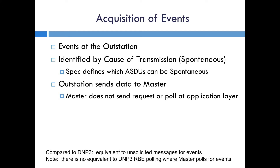Another function is called the acquisition of events. This is where the outstation can identify events or data changes and sends them to the master with the cause of transmission of spontaneous. The specification defines which ASDUs can be spontaneous, and in a similar way defines which ASDUs can be cyclic. The master does not send a request for this at the application layer — the outstation just sends it as the event occurs. This is very equivalent to unsolicited messages in DNP3, which also contain event data.